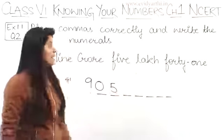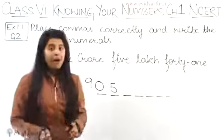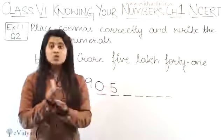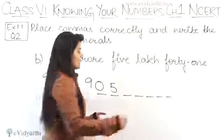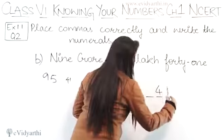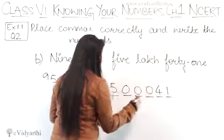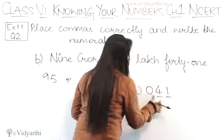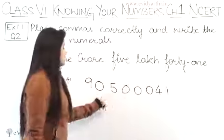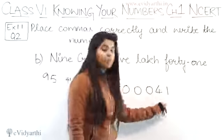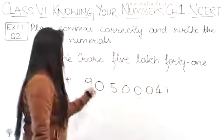So after 5, 5 digits should come. 1, 2, 3, 4, 5. After 5, these 5 digits will come. So 5 will come here. Okay. Now in this question, what mistake will happen? After that we have 41.